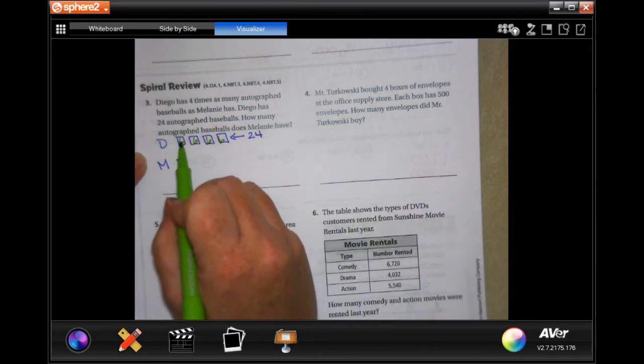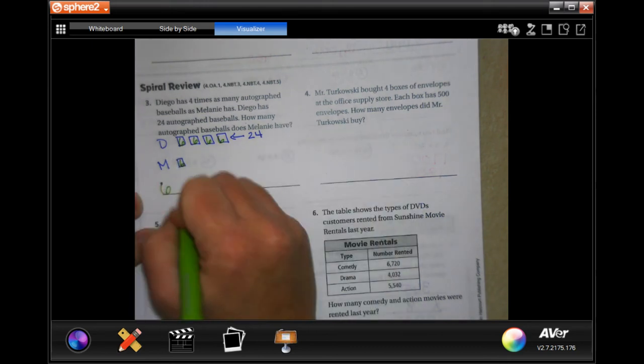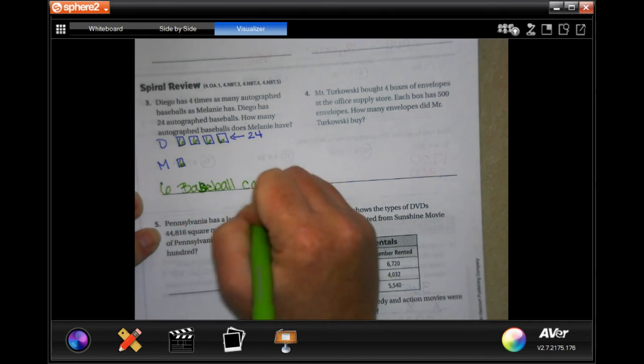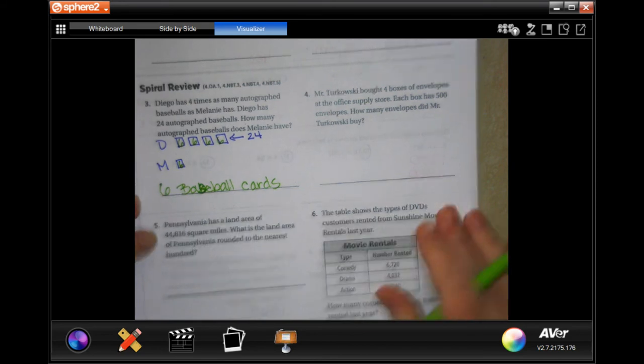So if one of those is six, then that means one of these is six. So Melanie has six baseball cards.